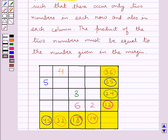Next, number 7. The two smallest multiples of number 7 given in these margins are 35 and 14. The square corresponding to these numbers is this square, so we place number 7 here.